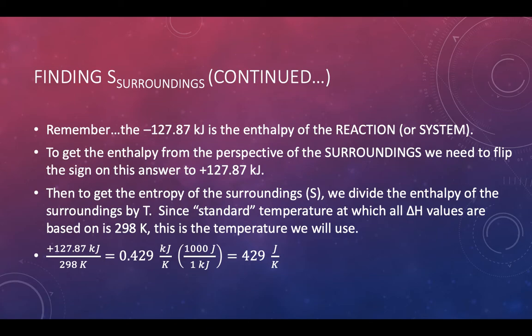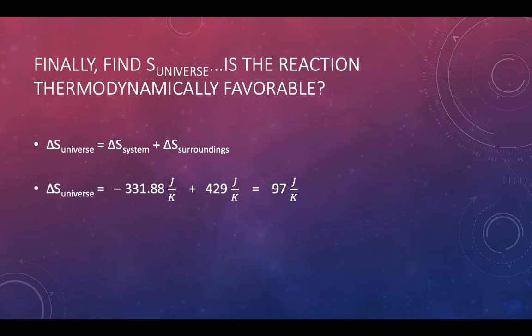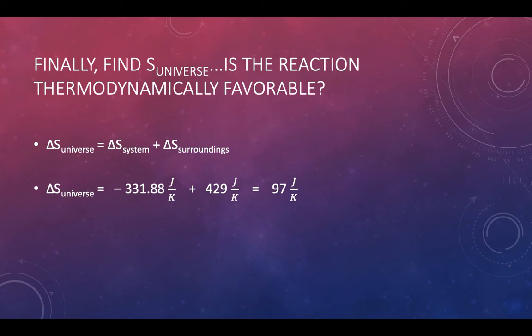Converting 0.429 kJ/K to joules per Kelvin gives us +429 J/K, so our units are compatible. To get delta S of the universe, we add delta S of the system (the reaction) and delta S of the surroundings. The reaction had a negative S value, but the surroundings had a positive S value. Adding those two numbers together gives a net positive 97 J/K.